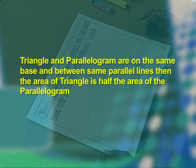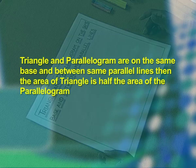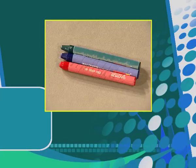Hello children. In mathematics, geometry plays a vital role. In geometry we come across closed figures like triangles and quadrilaterals. In quadrilaterals we see squares, rectangles, parallelograms, rhombus, and trapezium. Today we shall perform an activity which verifies that if a triangle and a parallelogram are on the same base and between the same parallel lines, then the area of the triangle is half the area of the parallelogram.